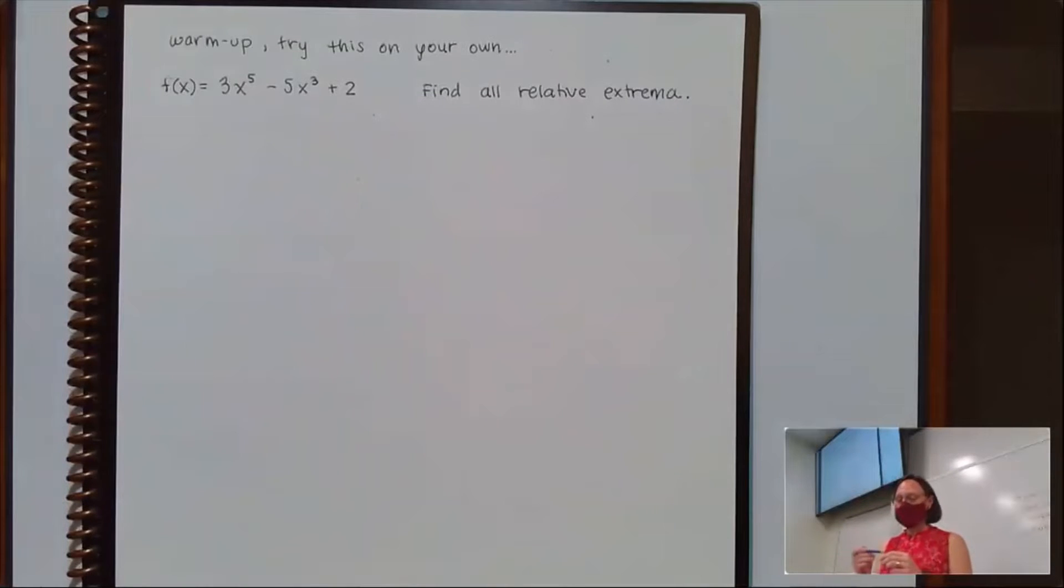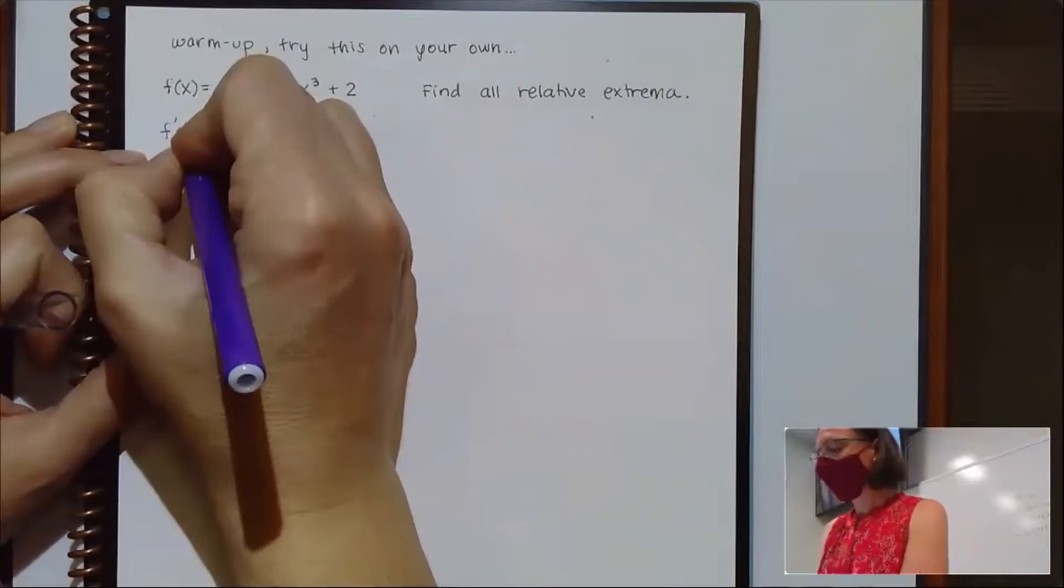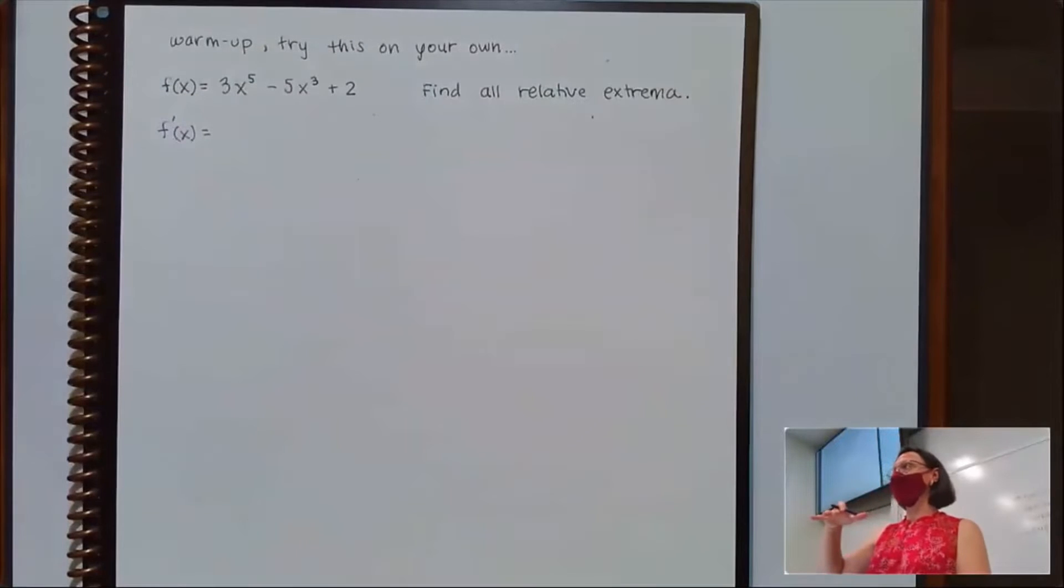When we're talking about relative extrema, we're looking for those points where we're either at a high point on the graph or a low point on the graph. Either way, my first step is going to be to set the derivative equal to 0.